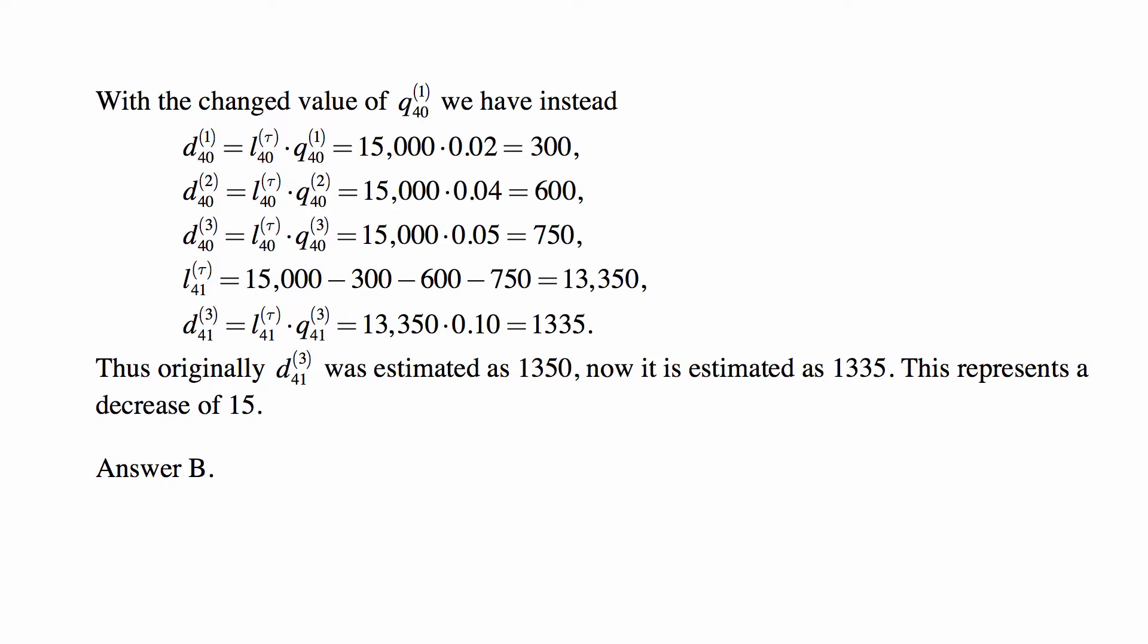And this is what you get after the correction. So for the first year, the only thing that changes is that decrement one eliminates 300 instead of 150. And otherwise, we also have 600 and 750 as before. So the population size at the end of the first year, age 40, and the beginning of the second year, age 41, is now 13,350, 150 less than before.